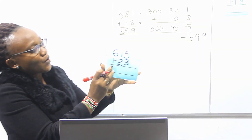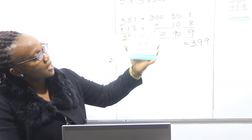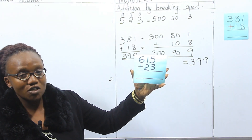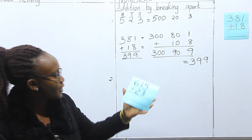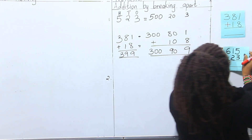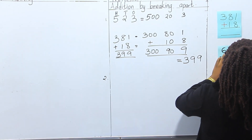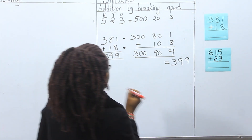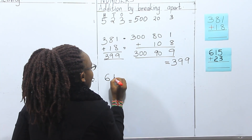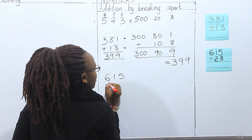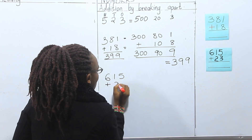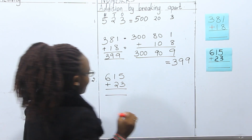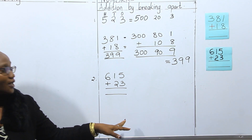I pick another card and we have another sum here: 615 plus 23. Let me show the card so we can all see. The sum is 615 plus 23. The first thing we do is break the numbers.